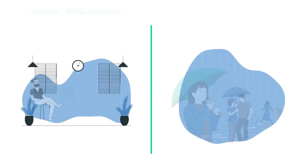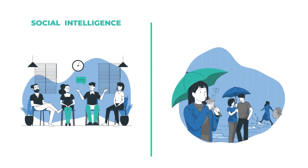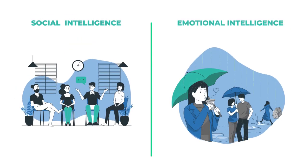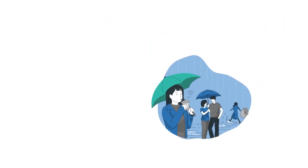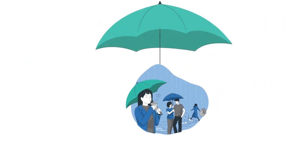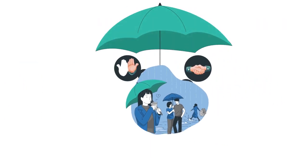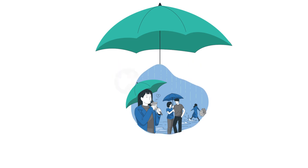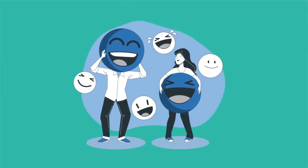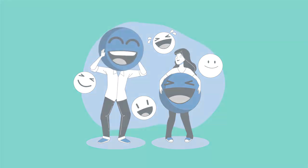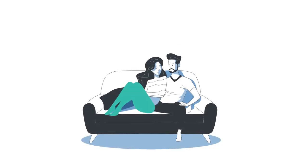Finally, we covered the difference between social and emotional intelligence, and how emotional intelligence is under the big umbrella of social intelligence. So people who can understand and manage their emotions can probably be more successful when establishing and maintaining relationships.